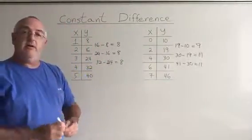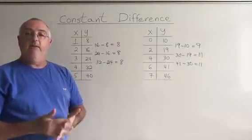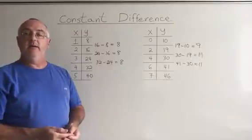So the constant difference trick is very useful when looking at table values when you're trying to decide what type of relationship exists between the x's and the y's in the function.